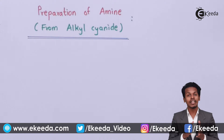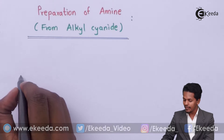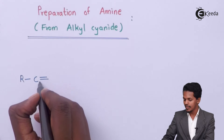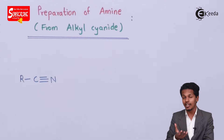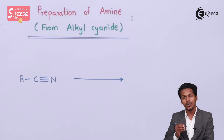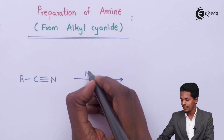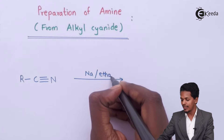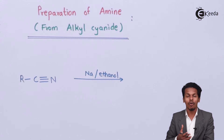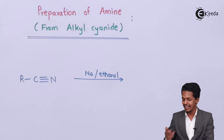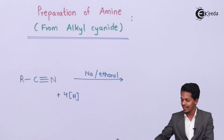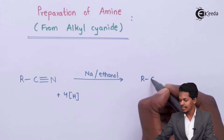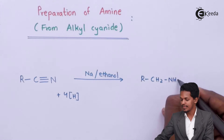This is the reaction where we can convert alkyl cyanide into amine. The general reaction is: if we have R-CN (alkyl cyanide) and react it with reducing agents like hydrogen — to produce nascent hydrogen we take sodium and react it with ethanol — sodium reacting with ethanol produces nascent hydrogen.